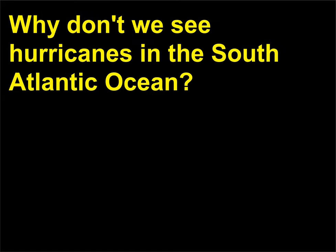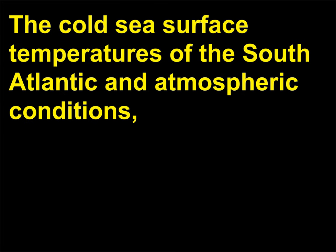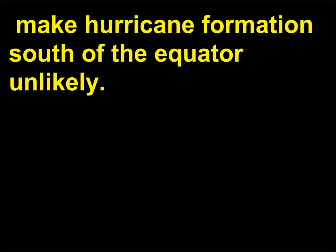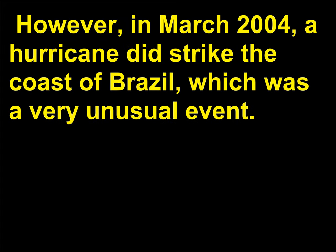Why don't we see hurricanes in the South Atlantic Ocean? The cold sea surface temperatures of the South Atlantic and atmospheric conditions — such as the tendency of the intertropical convergence zone to remain in the northern hemisphere — make hurricane formation south of the equator unlikely. However, in March 2004, a hurricane did strike the coast of Brazil, which was a very unusual event.